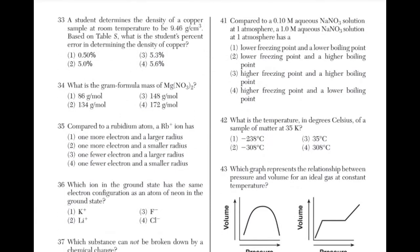A student determines the density of a copper sample at room temperature to be 9.46 g/cm³. Based on table S, what is the student's percent error? The formula for percent error is the measured value minus the accepted value, divided by the accepted value, times 100. The measured value is 9.46 g/cm³ and the accepted value is 8.96 g/cm³. The calculation is (9.46 − 8.96) ÷ 8.96 × 100, giving an answer of 5.58%, which rounds to 5.6%.